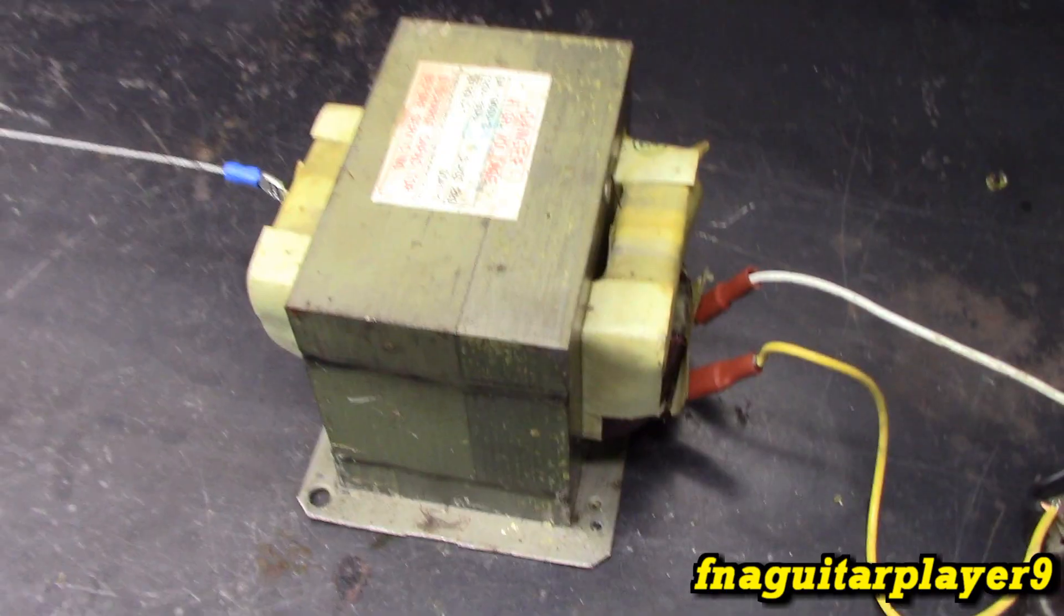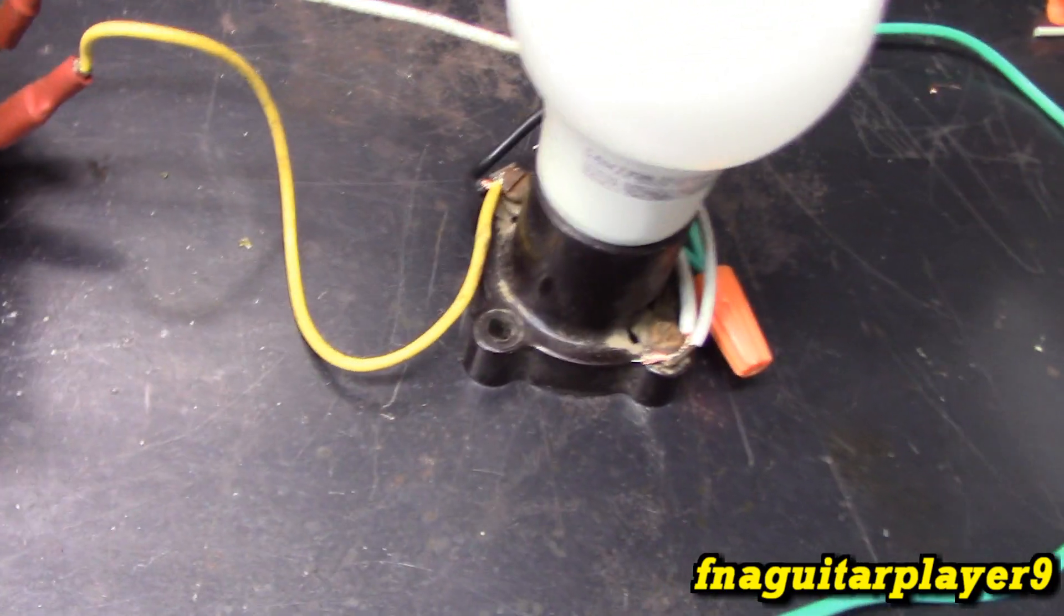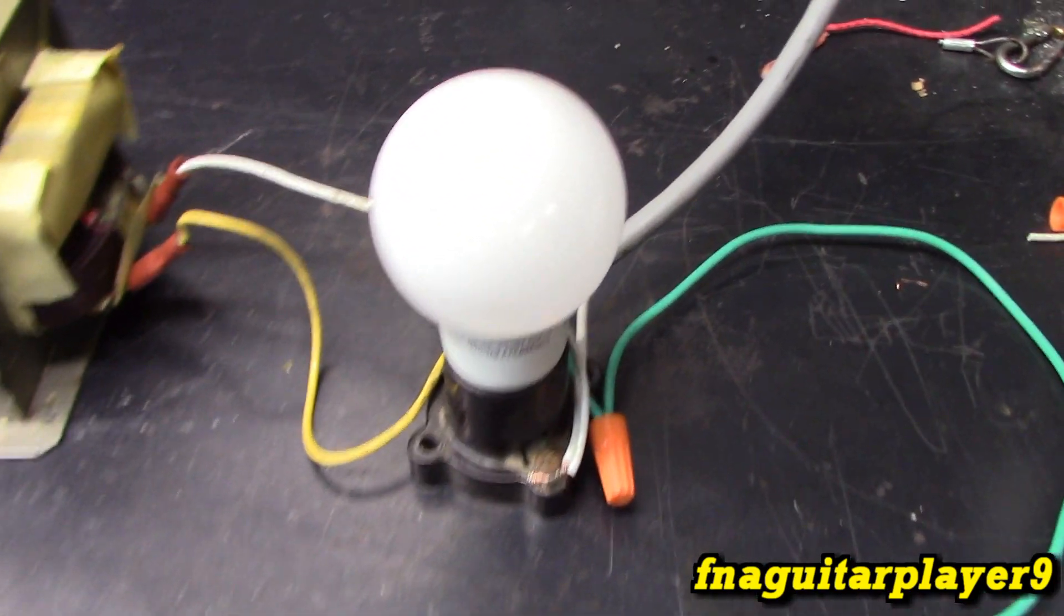This is just a switch box that runs straight into the primary side of this microwave oven transformer. This 120 volt light bulb is wired up in parallel with the primary, just to demonstrate that there is 120 volts on this side.